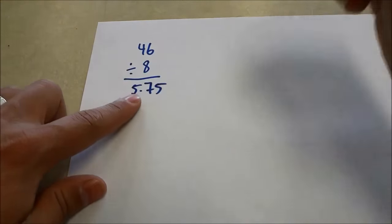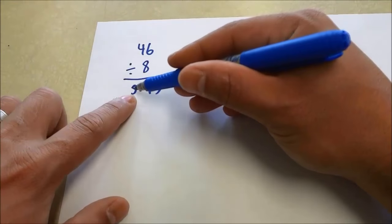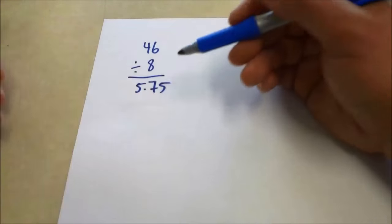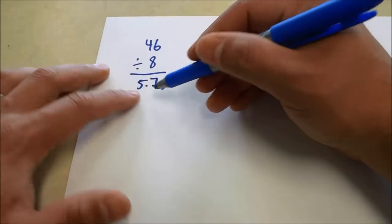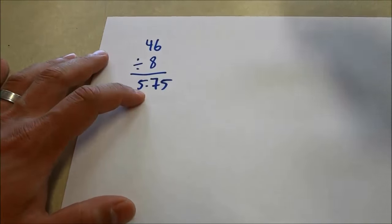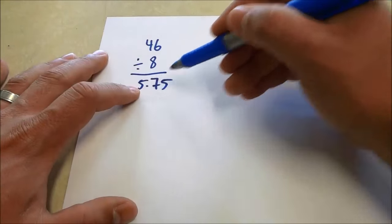Now you take this number, the first number here before the decimal and you're going to add two to that number if there is a decimal. If there's no decimal, if let's say that the answer was just five, you're just going to add one. But because it's 5.75, we're going to add two to the five, to the first number.